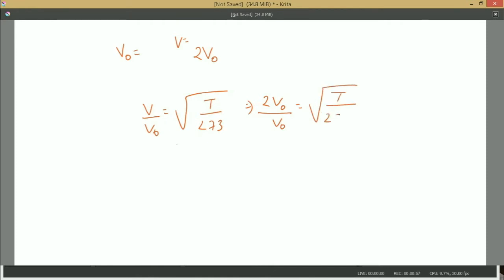So V₀, V₀ cancel. This is 2. The root will come this side, 4 is T by 273. So this means 273 into 4 is T, so T equals 1092 and this is in Kelvin.